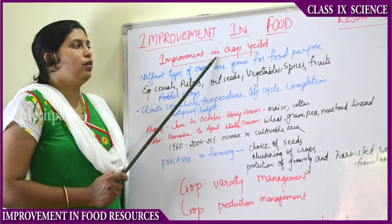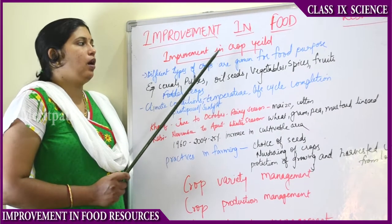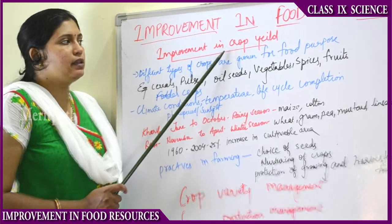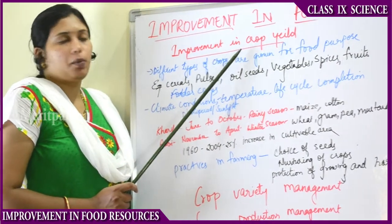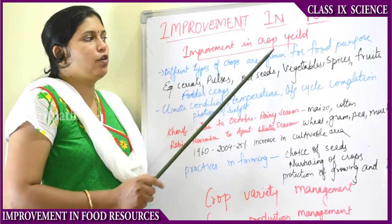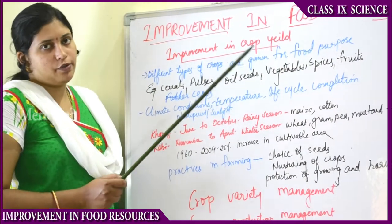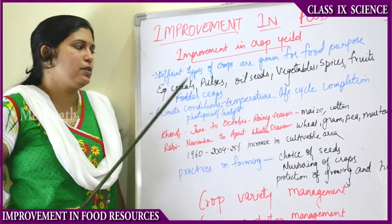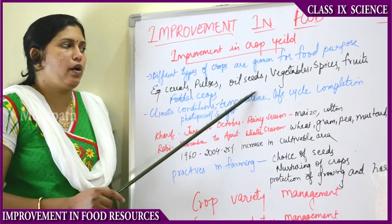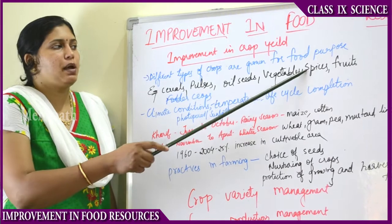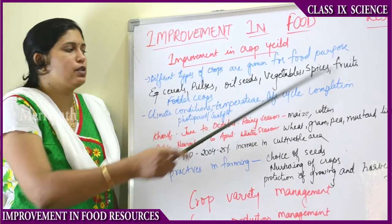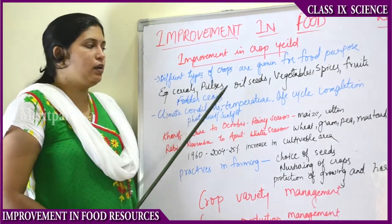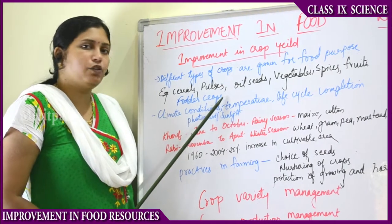We will read about improvement in crop yield - how to improve the yield in crops and the methods for that. Different types of crops are grown for food purpose. The different types of crops are cereal crops, pulses, oil seeds, vegetables, spices, fruits, and fodder crops. Fodder crops are food for livestock, poultry animals, and cattle.